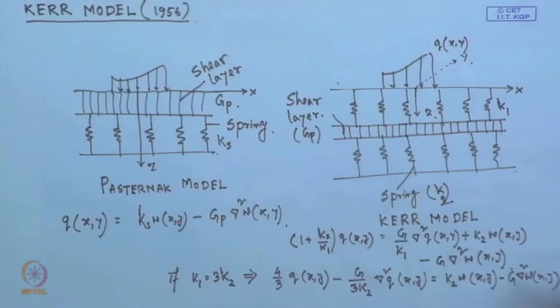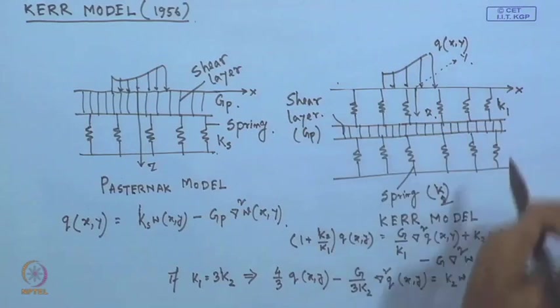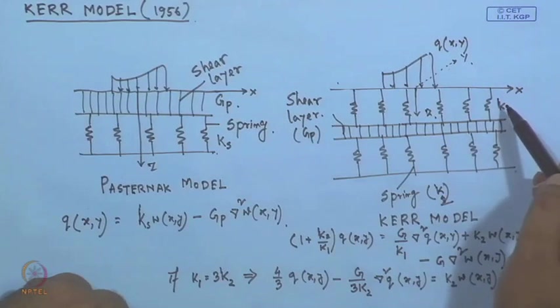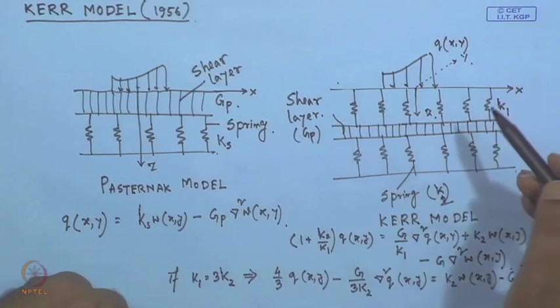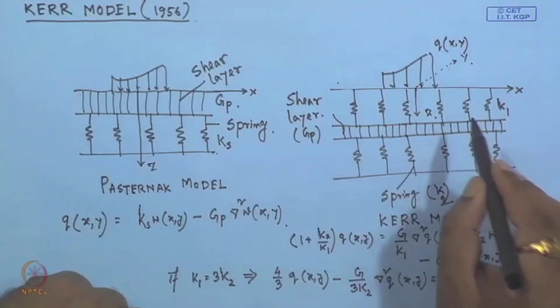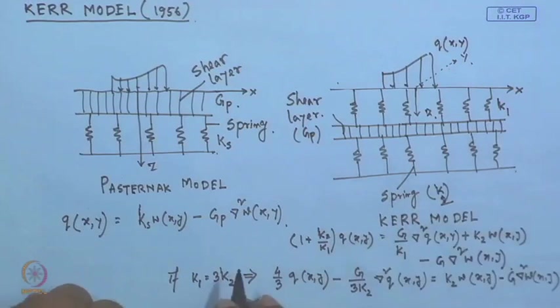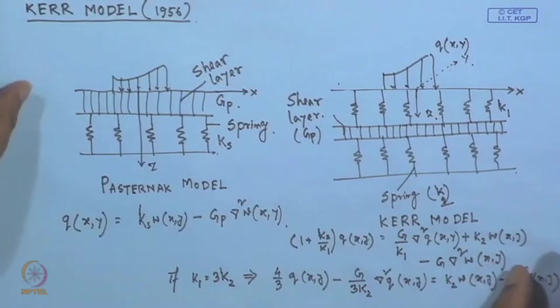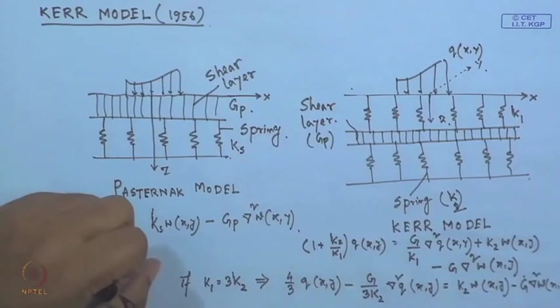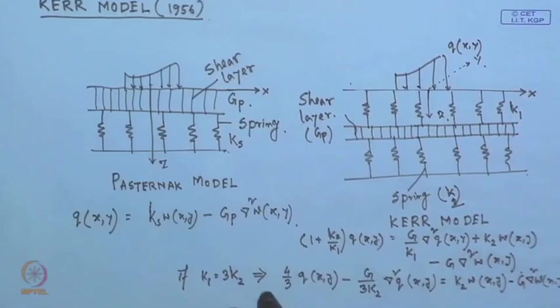The advantage of this curve model over the Pasternak model is that instead of a two-parameter model, we can use two different types of soil with moduli of subgrade reaction k₁ and k₂. An additional boundary condition is also available for this curve model, giving us another parameter so we can represent the soil behavior more correctly. By using different components for connectivity, this improved model removes the lack of continuity limitation of the Winkler model.